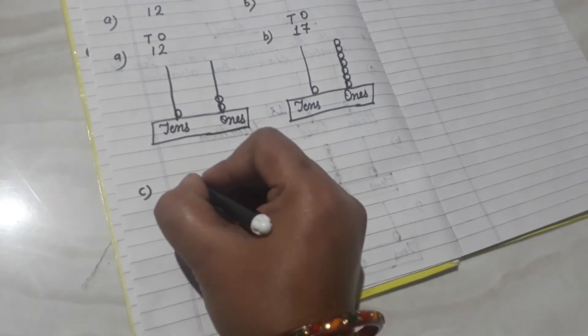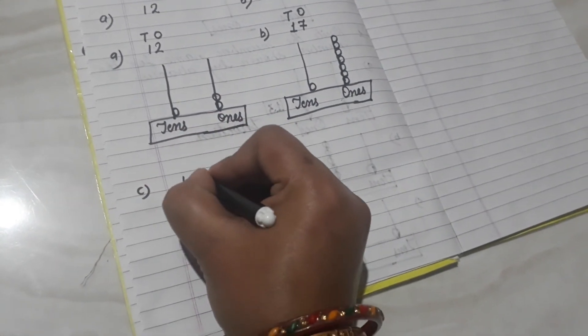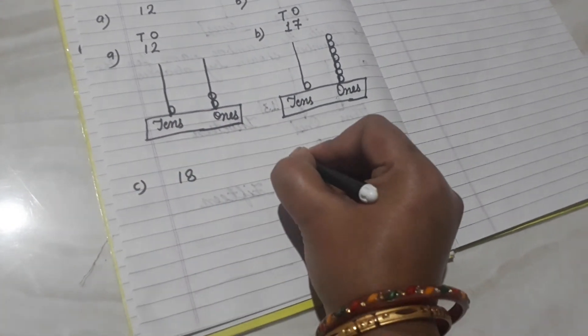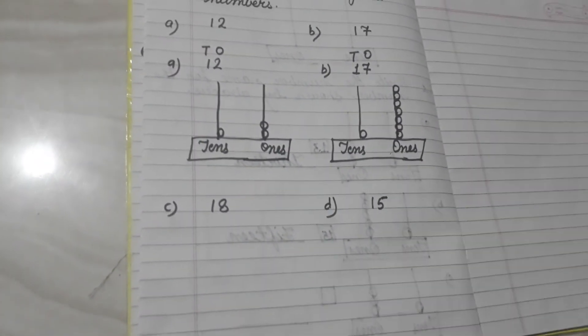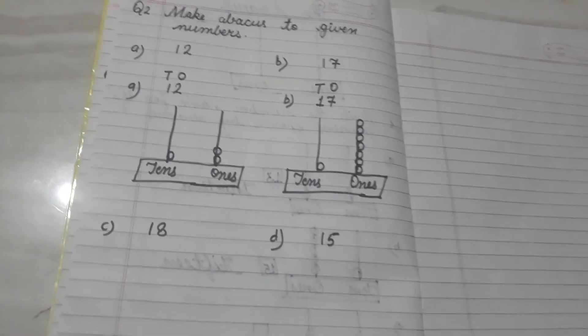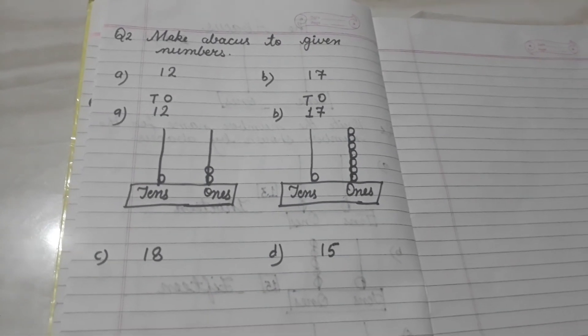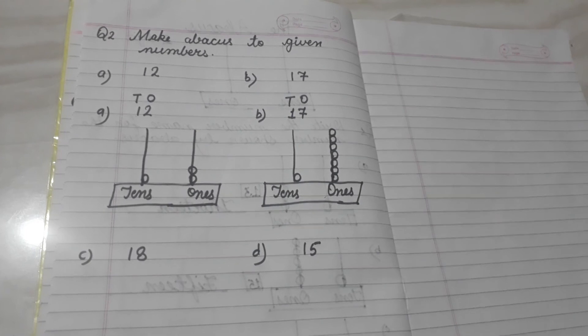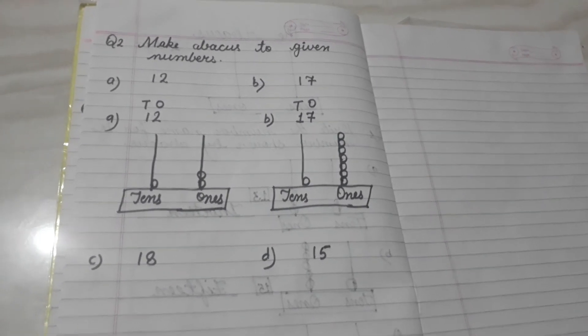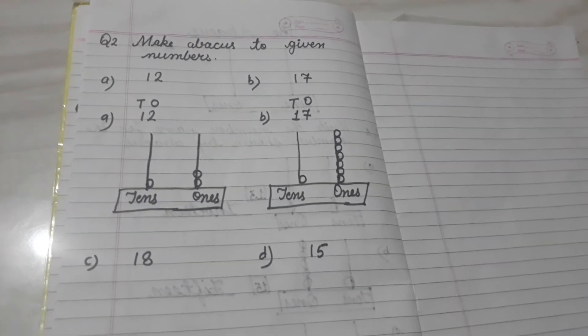Like this, C number is eighteen and D number is fifteen. What you have to do? Make the abacus in your rough notebook and learn it properly. Do practice and we will meet in my next lecture. Goodbye, students!